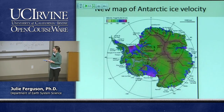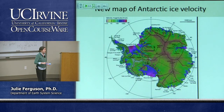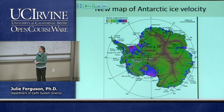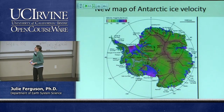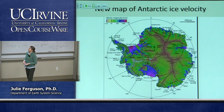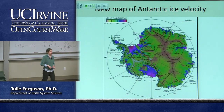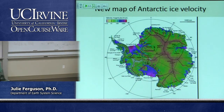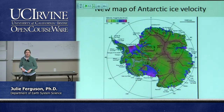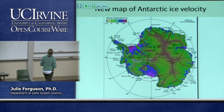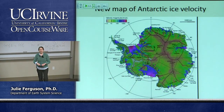Satellite imagery produces beautiful maps showing how fast different parts of the ice are moving — and it's definitely not all moving at the same rate. Researchers in this department produced the first comprehensive map of Antarctic ice velocity. The reddish, yellow, and green areas move slowly — around 1.5 to 10 meters per year. But certain areas are moving really fast, up to over a kilometer per year in some places.